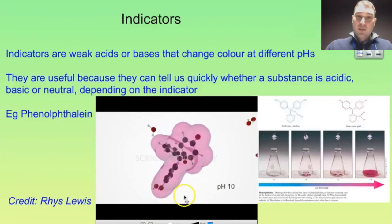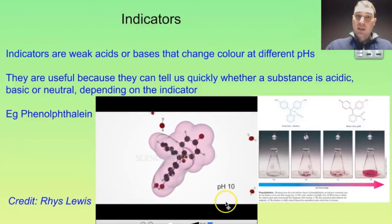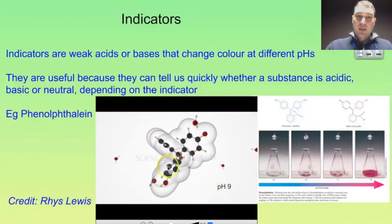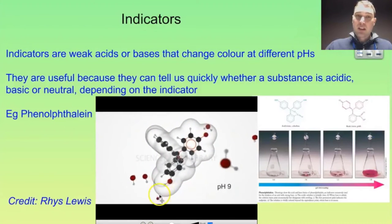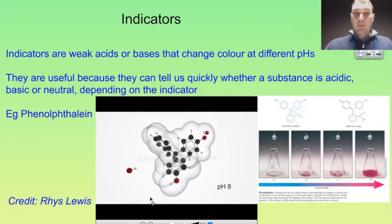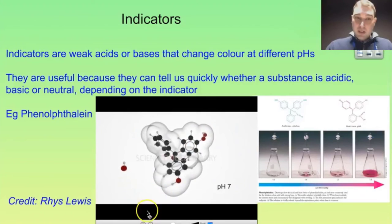When we reverse the pH — where we go back to being an acid — the molecule changes shape back and we get back to the colorless situation we were in.